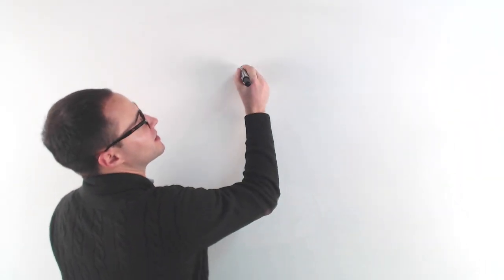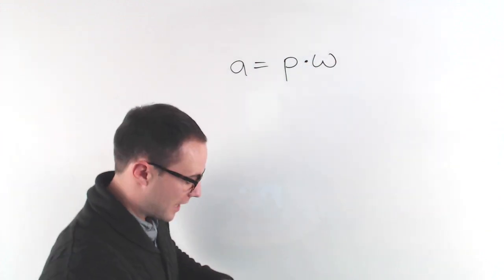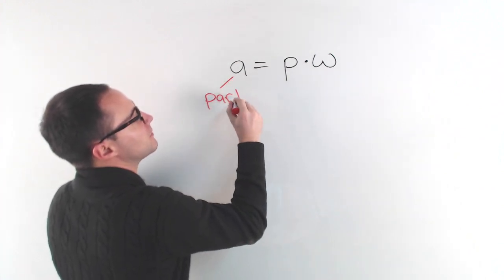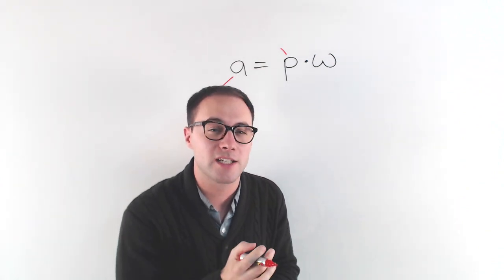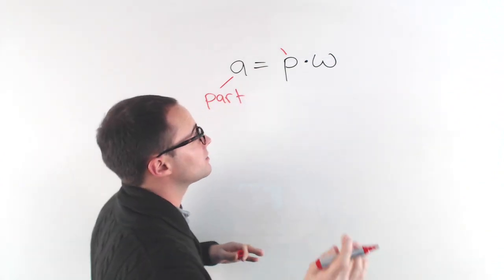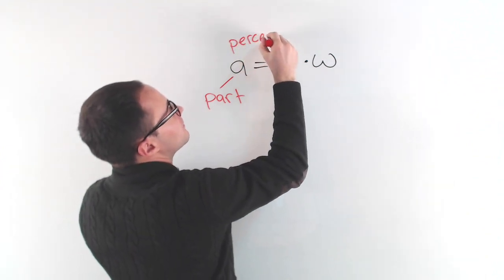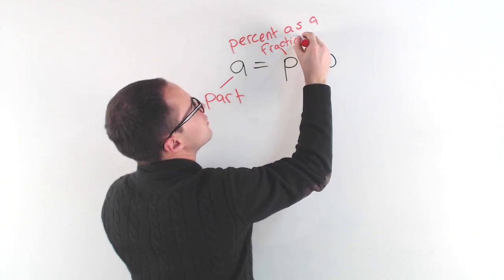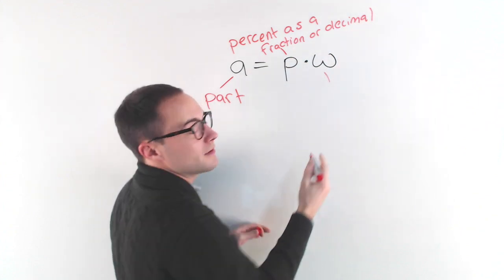Before we get to the first example, let's talk about the percent equation. The percent equation is A equals P times W. Now A represents the part. P represents the percent, but we write the percent as either a fraction or a decimal. So that's really important. We don't write it with the percent symbol. So percent as a fraction or decimal, and then W is the whole.